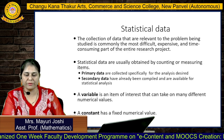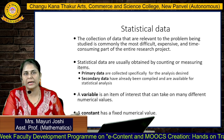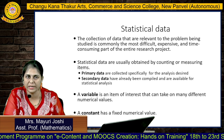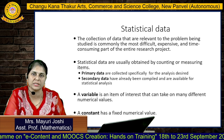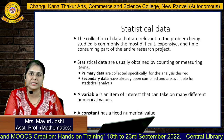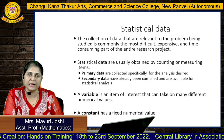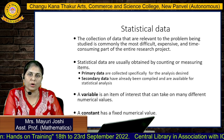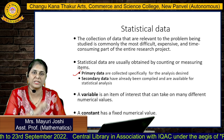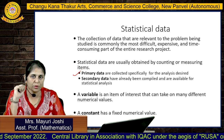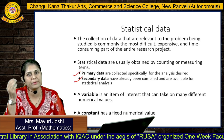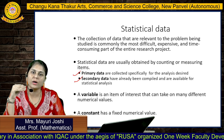Data is defined as the collection of information relevant to the problem being studied, and it is commonly difficult, expensive, and time-consuming to collect. Statistical data is obtained by counting or measuring items. There are two types of data: primary data, which we collect specifically for ourselves, and secondary data, which is data that has already been collected.